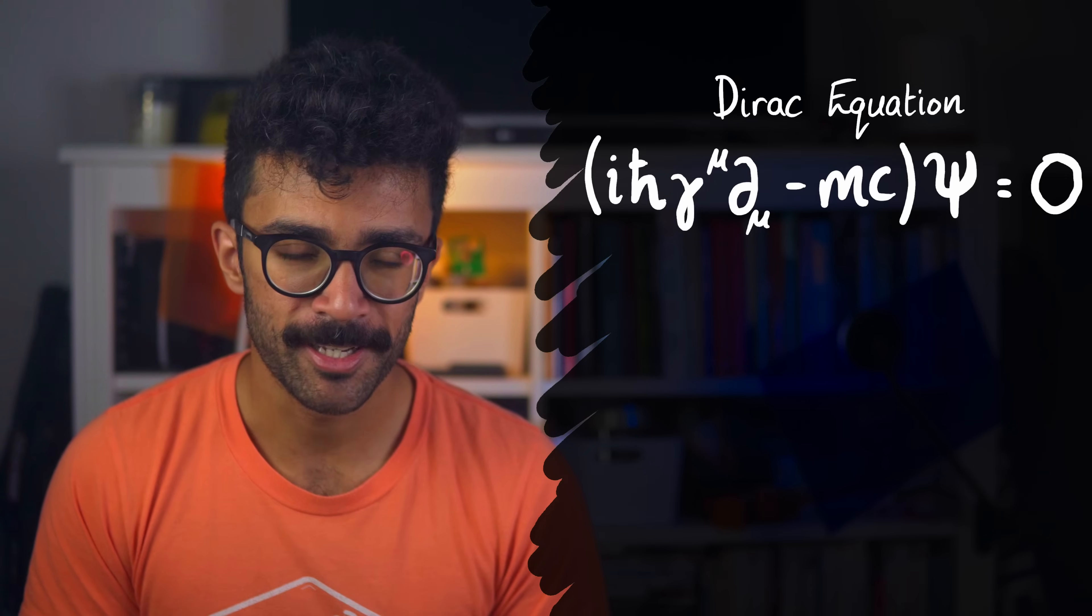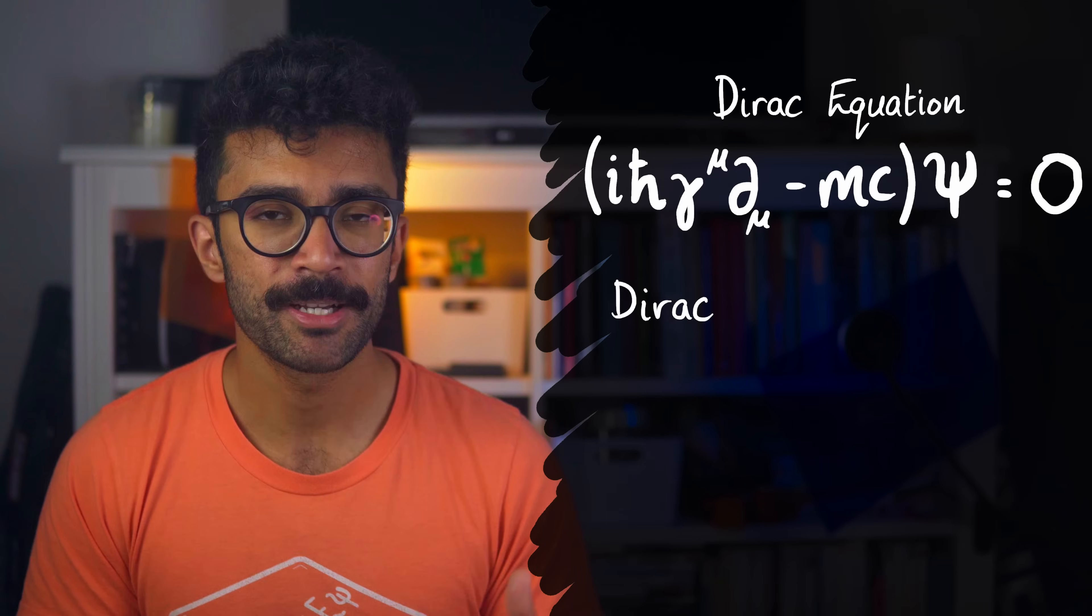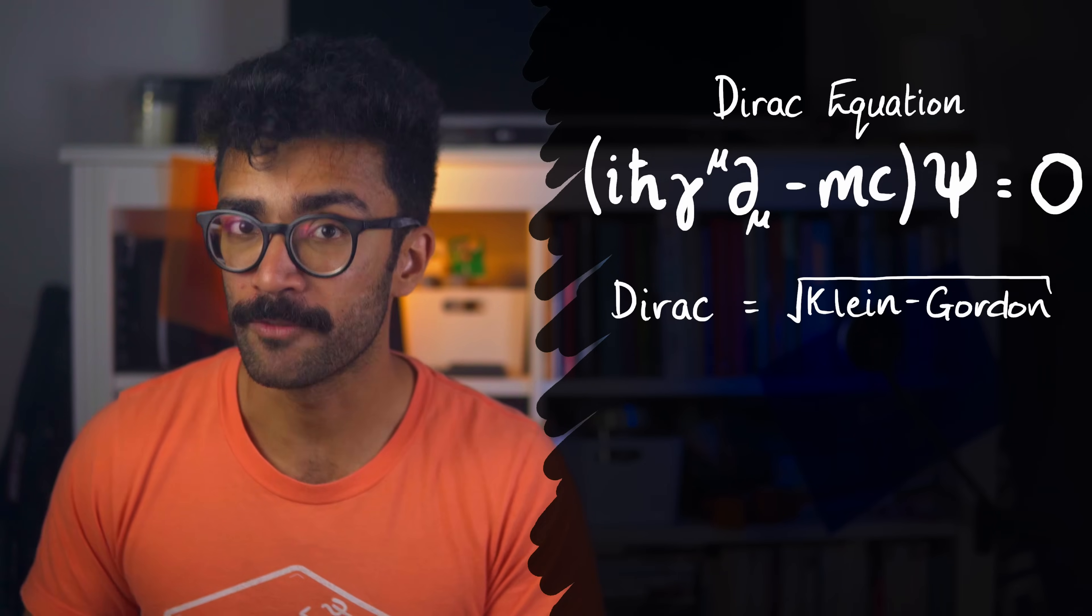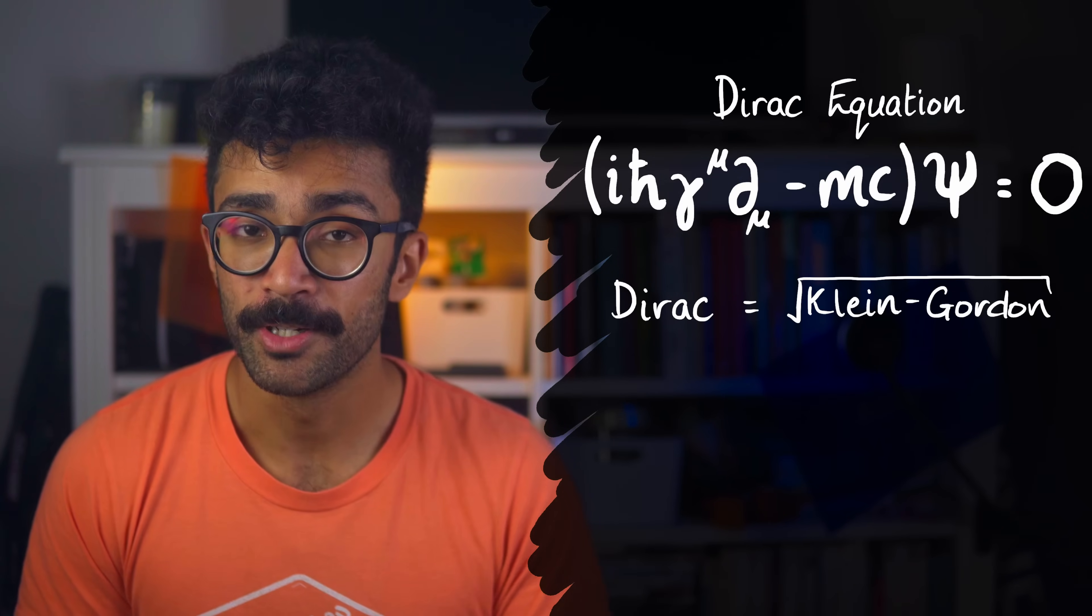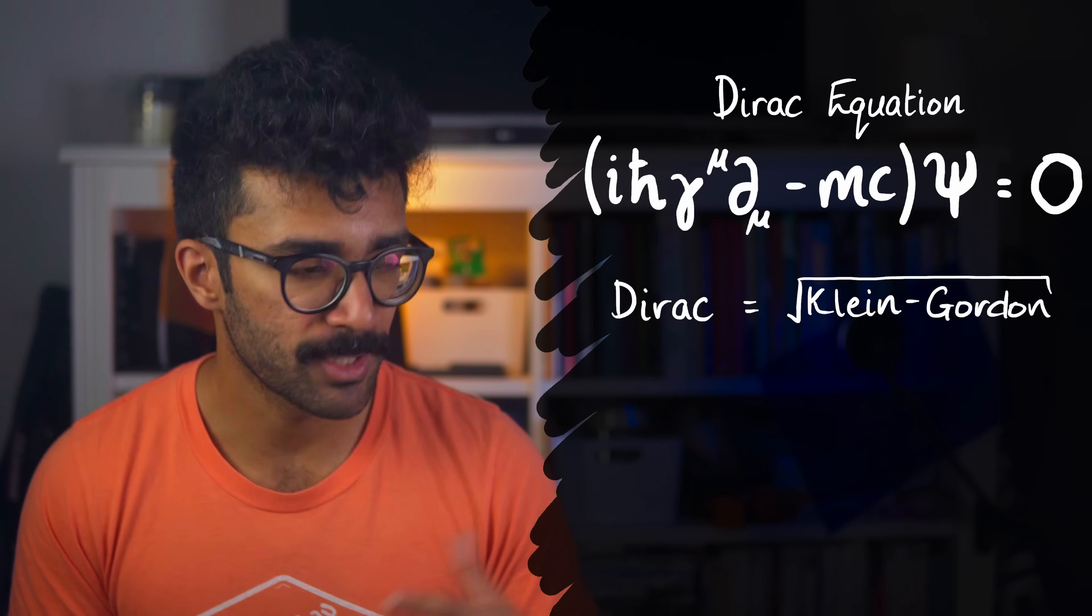The equation we'll go for is the rather famous but hugely difficult to understand Dirac equation. To understand the Dirac equation, I'm going to use a loose analogy. In a very rough way, the Dirac equation is basically the square root of the Klein-Gordon equation.